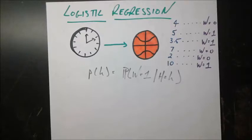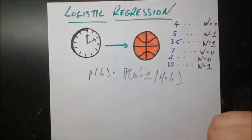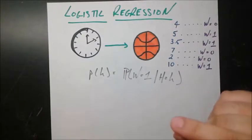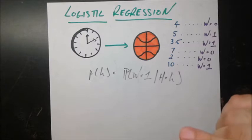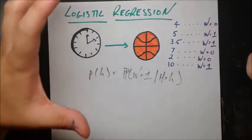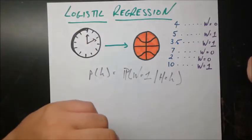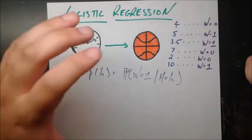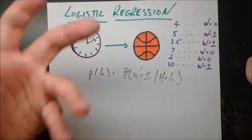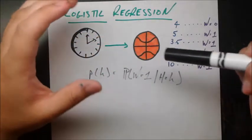In this video, we'll be looking at a type of regression called logistic regression. This is a little bit different from the previous kind of regression models we've been using, because in those models, we were trying to predict some variable which is continuous. For example, we were trying to predict how much a household spent on food — that's a continuous variable.